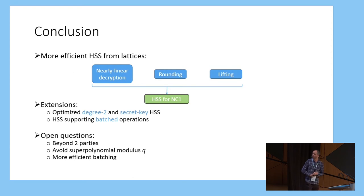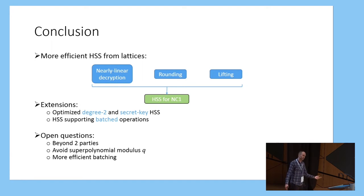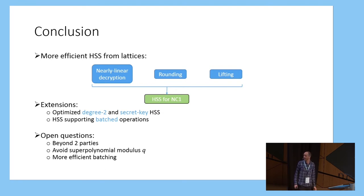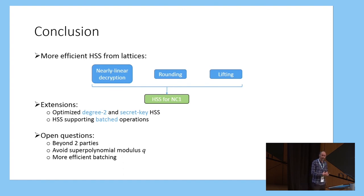Summing up: we showed how to build an efficient homomorphic secret sharing scheme from lattice-based encryption schemes using three main tricks — nearly linear decryption, a rounding trick, and the lifting trick — which together give us HSS for restricted multiplication programs, covering any branching program and log depth circuits. In the paper we also present a few extensions and optimizations, including optimizations for the special case of degree-two programs and a secret-key homomorphic secret sharing which can be applied to the private information retrieval example.